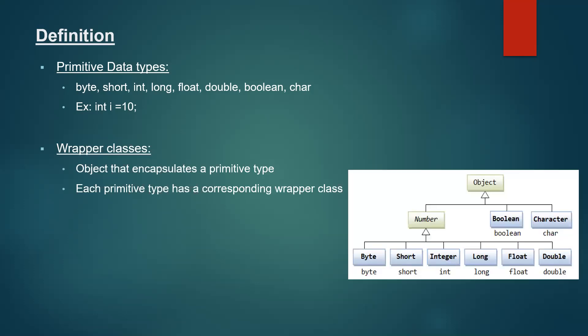You can see that in this diagram. All the primitive data types are written in lowercase: byte, short, int, long, float, double. And the wrapper classes start with an uppercase letter. These are the wrapper classes, and we can clearly see that all these wrapper classes have Object as the super class. Byte, Short, Integer, Long, Float, and Double also have Number as their immediate super class. This is the hierarchy of the wrapper classes.